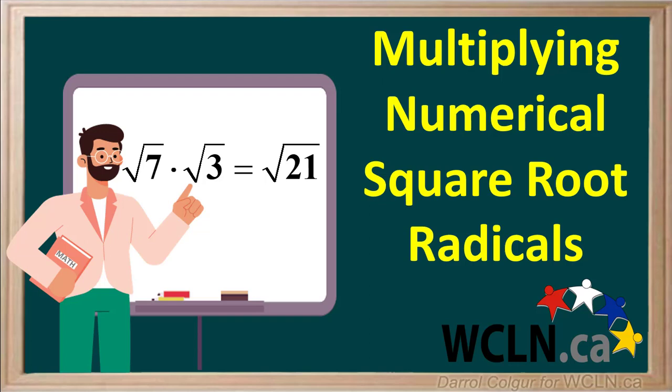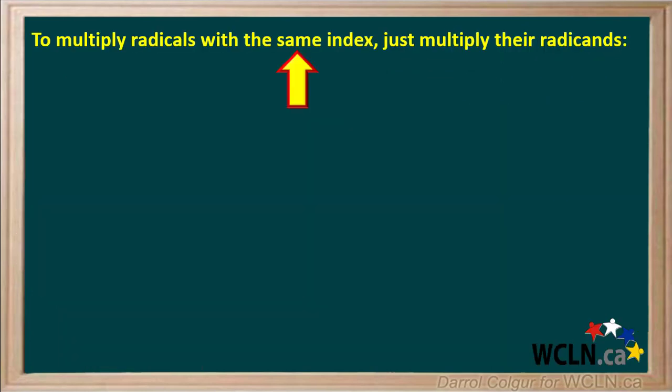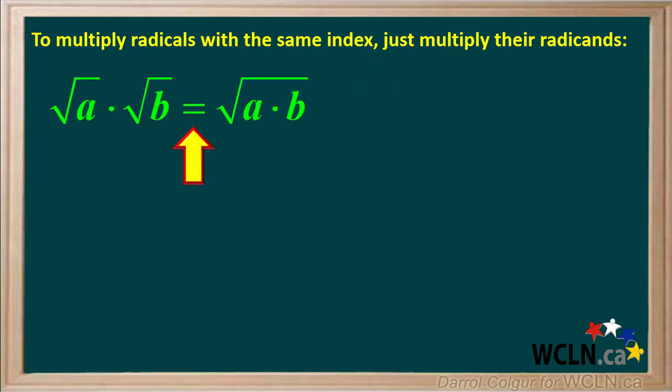We often need to multiply expressions containing square root radicals. To multiply radicals with the same index, just multiply their radicands. We'll use the variables a and b to illustrate this. The square root of a times the square root of b equals the square root of a times b.